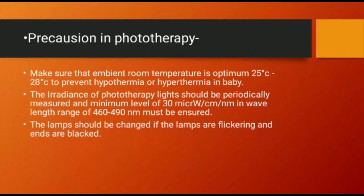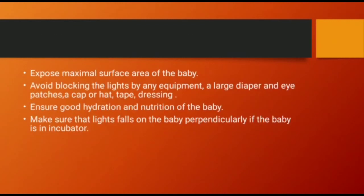Precautions in phototherapy: ensure that ambient room temperature is optimum at 25 to 28 degrees centigrade to prevent hypothermia or hyperthermia. The irradiation of phototherapy lights should be periodically measured, with a minimum level of 30 microwatts per centimeter squared per nanometer in the wavelength range of 460 to 490 nm. Change lamps if they are flickering or ends are black. Expose maximal surface area of the baby and avoid blocking the light with equipment, large diapers, caps, or dressings.